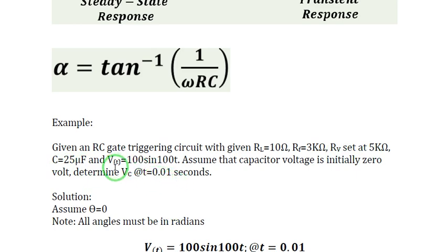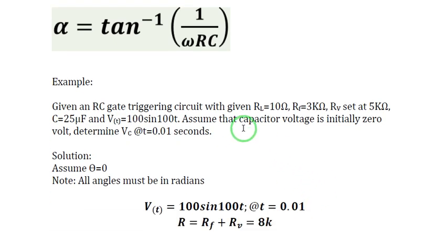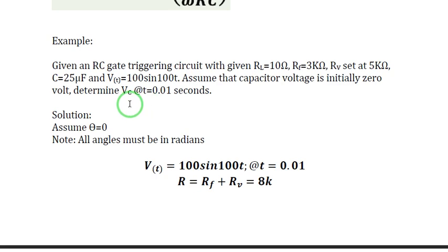We have V(t) equal to 100 sine 100t. We assume that the voltage across the capacitor is 0 initially. We are asked to determine the voltage across the capacitor after 0.01 seconds, or at t equal to 0.01 seconds.